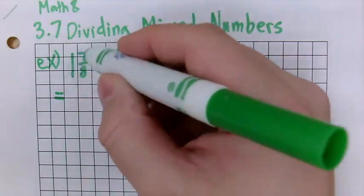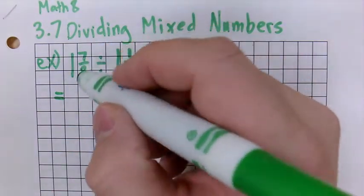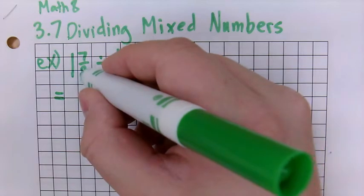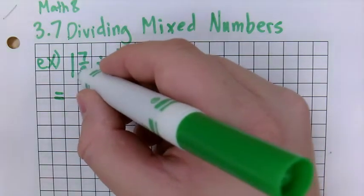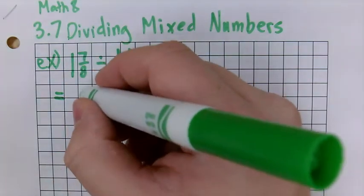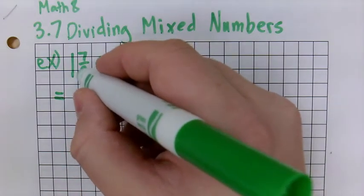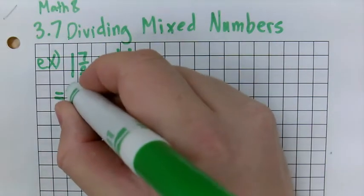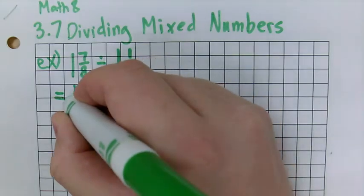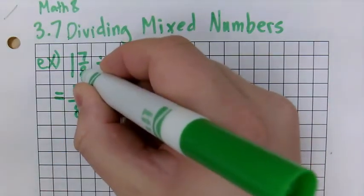So how do we find our improper fraction? We take the denominator, multiply it by the number out front, so 8 times 1 is 8, and then add the top, and that's what goes as your numerator. So 8 times 1 is 8, plus 7 is 15, and then all over 8 still.